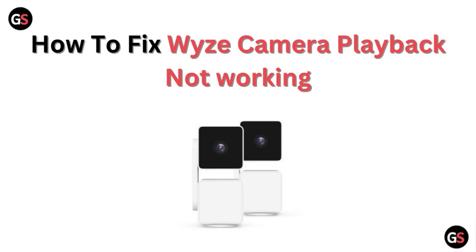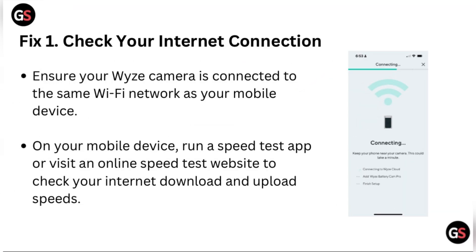Welcome to our channel. In this video we will discuss how to fix Wyze camera playback not working. Fix one: check your internet connection. Ensure your Wyze camera is connected to the same Wi-Fi network as your mobile device. Run a speed test app or visit an online speed test website to check your internet download and upload speed.